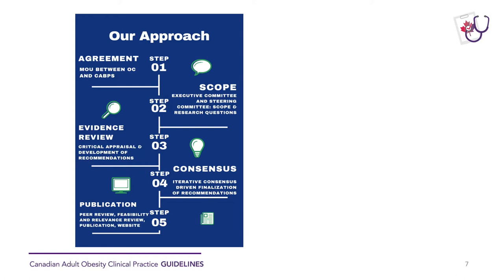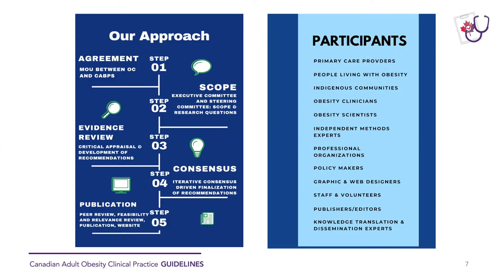There was an iterative approach to finalizing the recommendations. The final step was to finalize those recommendations, submit the manuscript for publication, and start the dissemination process. One of the key things to know about the development process is that we engaged a lot of participants — 64 authors in the published manuscript. We engaged primary care providers, people living with obesity, Indigenous communities, obesity clinicians, obesity scientists, as well as independent methods experts.